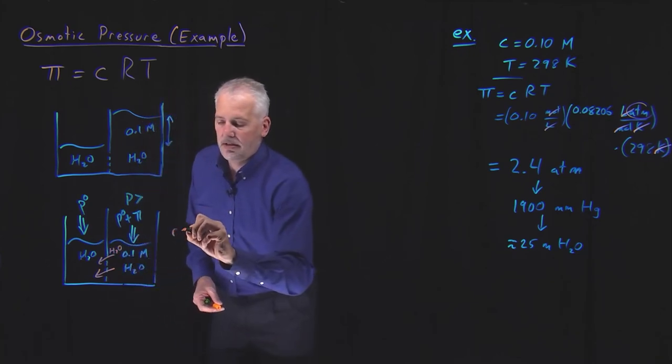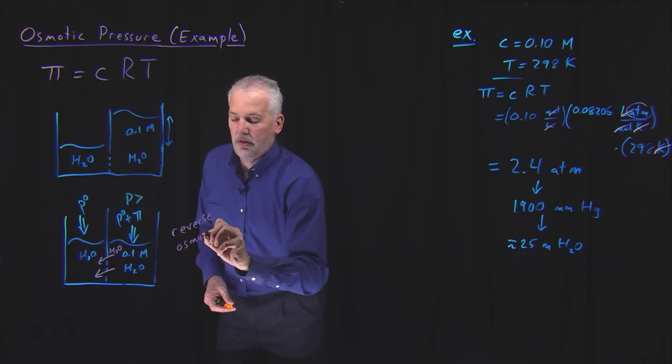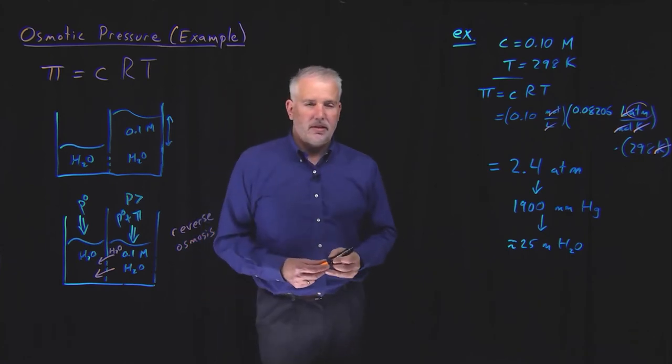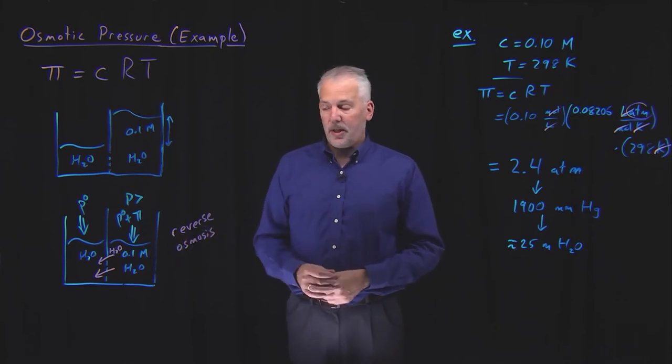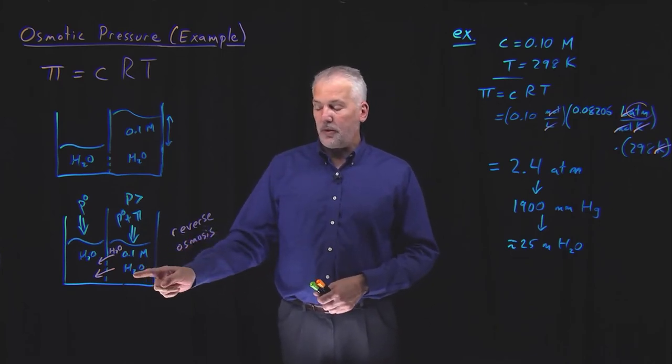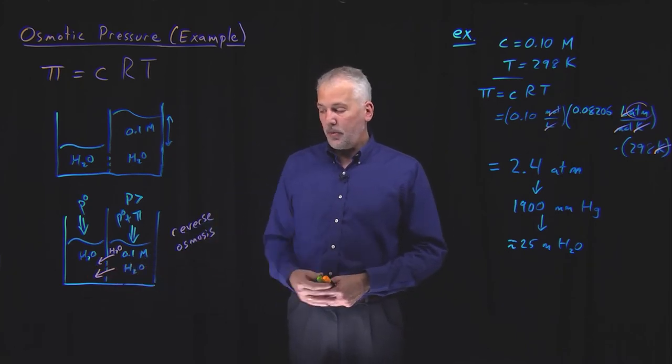But if the pressure on this side is greater than p-naught plus pi, what will happen is solvent will flow in this direction. That process, because it's the opposite of osmosis, is called reverse osmosis. So if you exert a pressure greater than the osmotic pressure, you can cause the solvent to flow from the concentrated side to the dilute side, reverse osmosis.